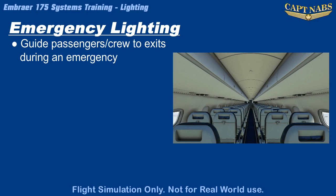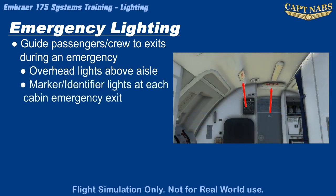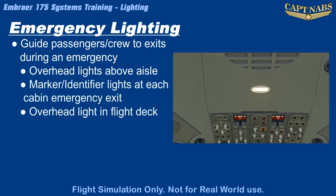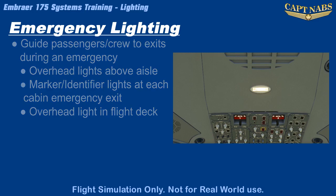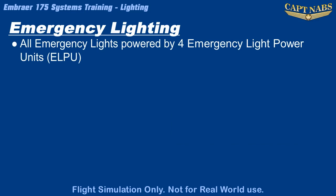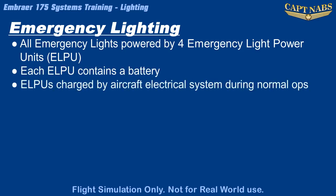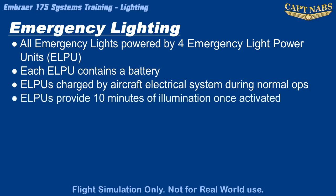The emergency lights consist of several different types. There are overhead lights on the aircraft ceiling above the aisle and at each emergency door, illuminated exit identifier signs above and beside each exit, and a single overhead light in the flight deck to aid pilots in exiting during an emergency. The emergency lights are powered by four Emergency Light Power Units, or ELPUs, each with an integral battery. The ELPU batteries are charged by the aircraft electrical system whenever powered, and will provide 10 minutes of illumination once activated.